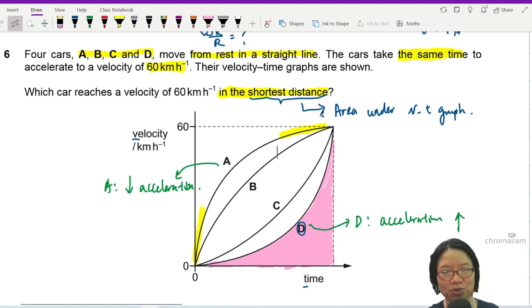But you don't have to think too much. Always ask yourself, what does the question want from you? If they want acceleration, then you will look at the gradient. Okay? So the acceleration here is decreasing, whereas D, the acceleration is increasing, because this one is becoming steeper and steeper.